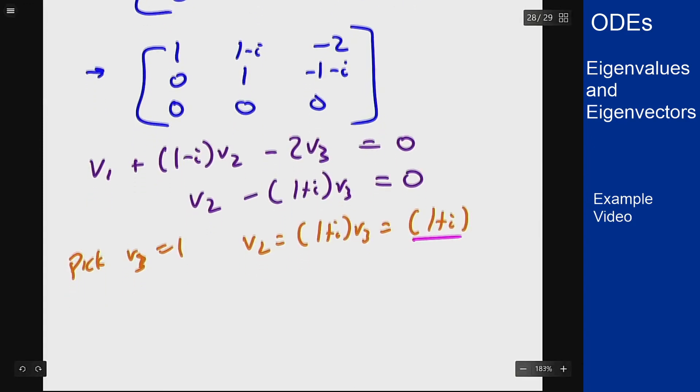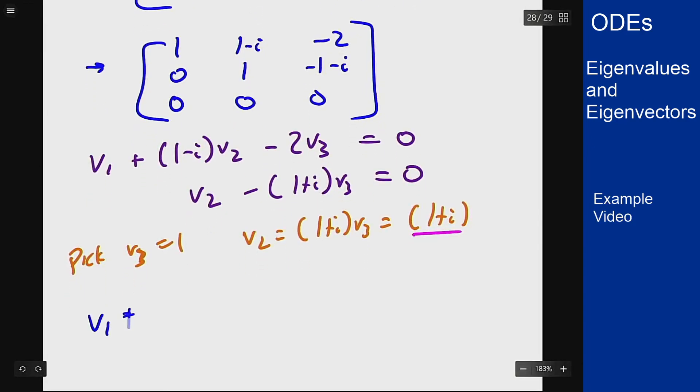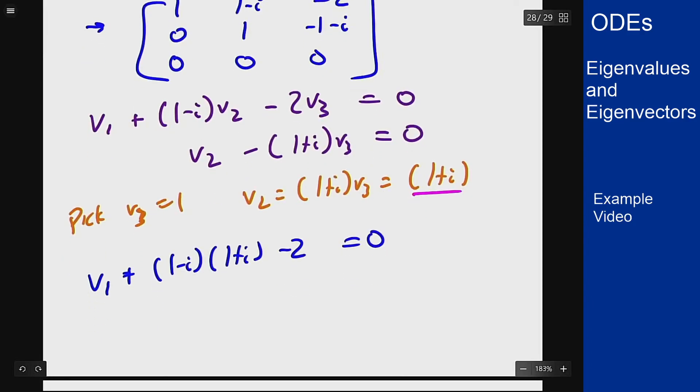And I can go to the first equation. In the first equation I have that v1 plus (1 minus i) times (1 plus i) minus 2 should equal 0. (1 plus i) times (1 minus i) is the difference of squares, which is 1 plus 1, which is 2. So v1 plus 2 minus 2 equals 0 means that v1 is 0.